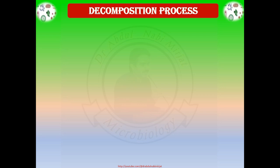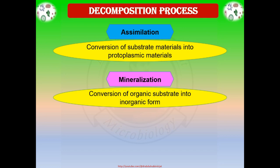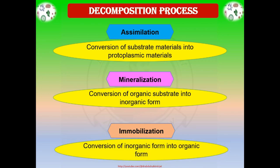The decomposition process is divided into three main processes. First, assimilation — the conversion of substrate materials into protoplasmic materials, for example, organic carbon to microbial carbon, or protein into microbial protein. Second, mineralization — the conversion of organic substances to inorganic form, for example, protein from organic matter converted into inorganic nitrogen in soil. Third, immobilization — the conversion of inorganic form into organic form, such as inorganic nitrogen from soil converted into microbial protein.